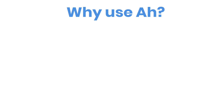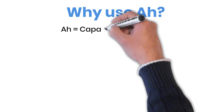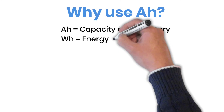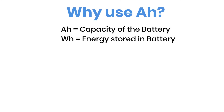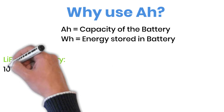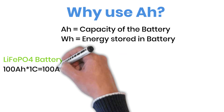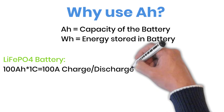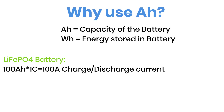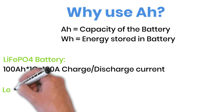So why even use amp hours? Amp hours help when you're calculating currents and discharge rates — the C rate. The C rate tells you how quickly a battery is charged or discharged. In general terms, the C rate for a lithium battery is 1C, while for a lead acid battery it's 2C. That helps you estimate the maximum safe current.